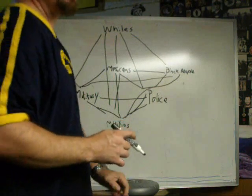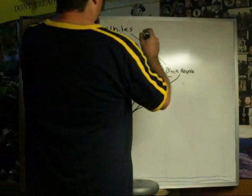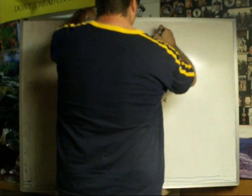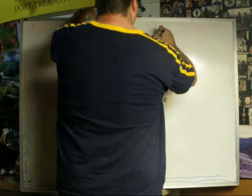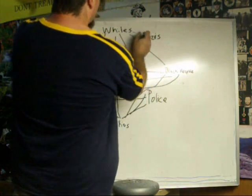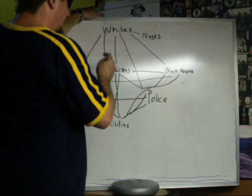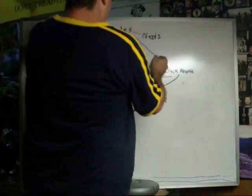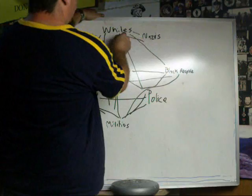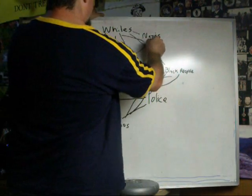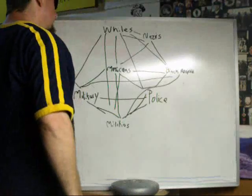Out of the whites, we can pull out groups specifically like the Nazis, who the majority of white people do not agree with and dislike. And then the Nazis, obviously, don't like whites that associate with blacks, don't like Mexicans, don't like black people.